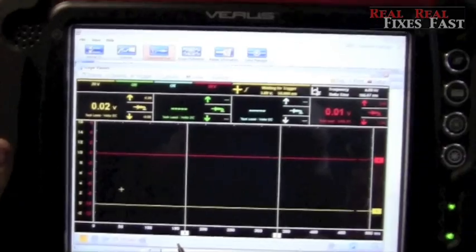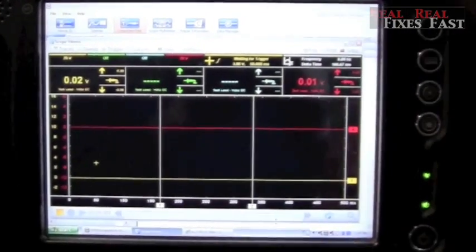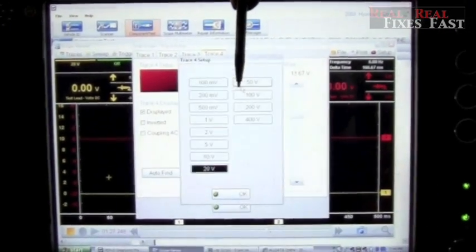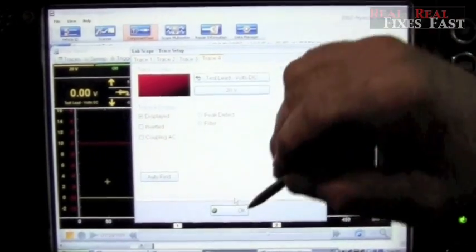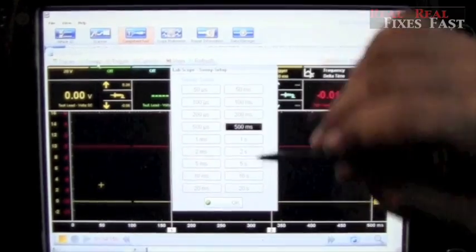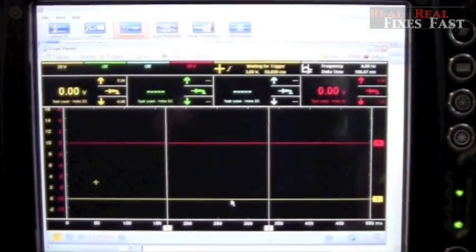Now we're going to start the car. Now before I start, I want to show you what our trace is set at. We're set at 20 volts. We're going to leave that there, and we've got a sweep set at 500 milliseconds. We're going to leave that there. Now we're going to crank the engine.